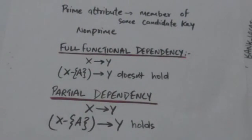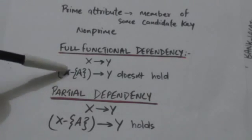Next is full functional dependency. The functional dependency from X to Y is a full functional dependency if this dependency does not hold anymore when we remove any attribute A from X.